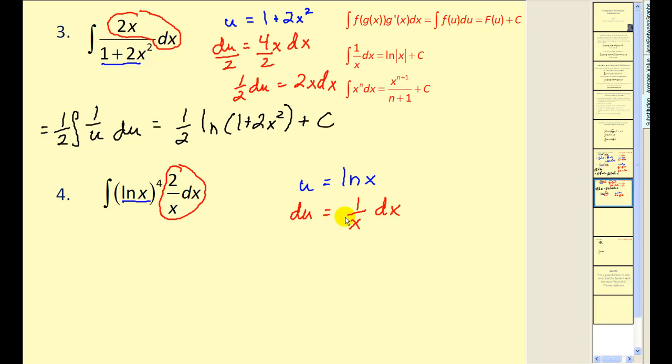So what we can do then is multiply both sides by two, so we'd have 2du equal to 2/x dx. This makes the substitution much easier. So our integral will be u^4, and then this is replaced with 2du.